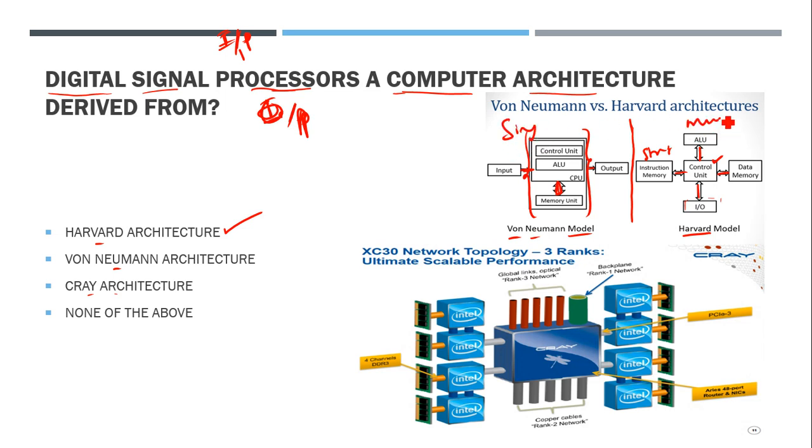Multiple buses provide better speed for short distances. These are the best architectures for short distance communication, whereas for long distance communication, Von Neumann is best from an industrial aspect.